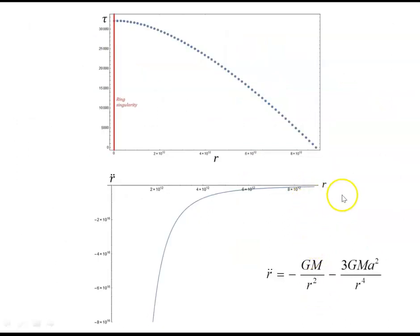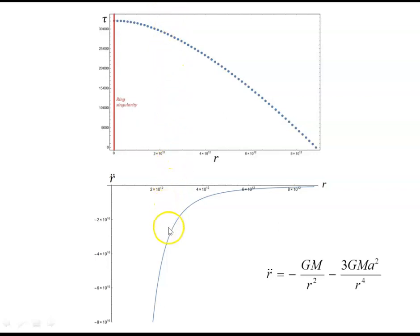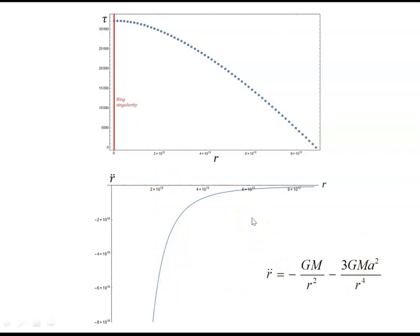There seems to be a form of acceleration at work. From a previous video, m r-double-dot equals minus dV_effective/dr, and with h = 0 and epsilon = 1, r-double-dot is a negative expression — negative because it's inwardly directed acceleration. A second plot with the starting distance shortened to about 4GM/c² shows that after the outer event horizon, the acceleration really asymptotically takes off and becomes exponential.